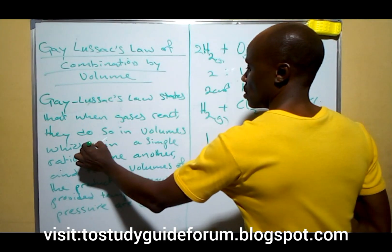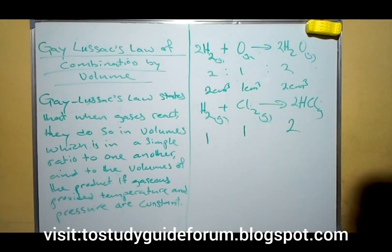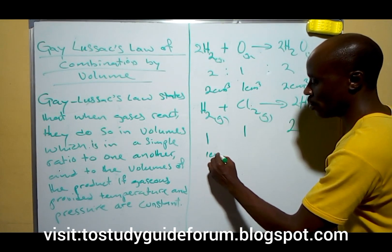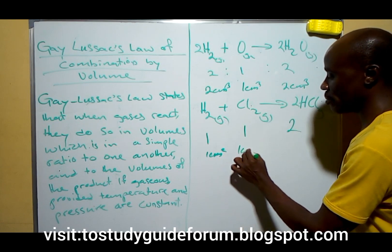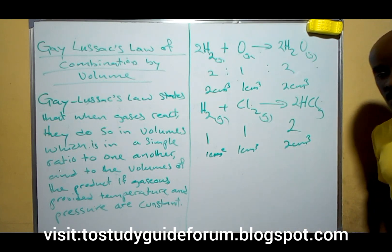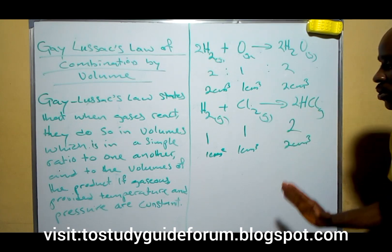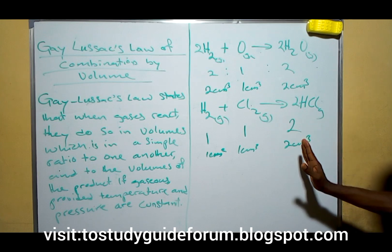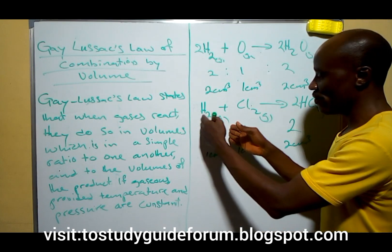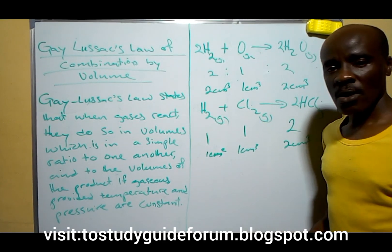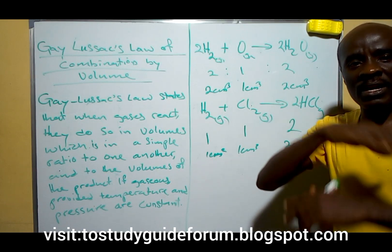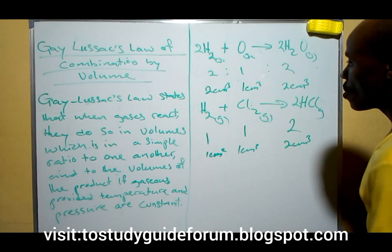The same thing applies when chlorine and hydrogen combine. We notice that 1 cm³ of hydrogen combines with 1 cm³ of chlorine to give us 2 cm³ of hydrogen chloride. This tells you how each gas will combine. If any of these gases is in excess, they will still maintain this ratio in every reaction they undertake.